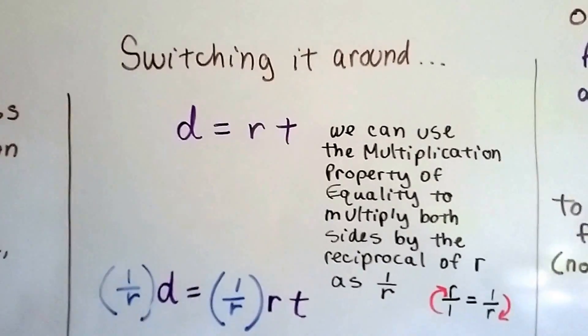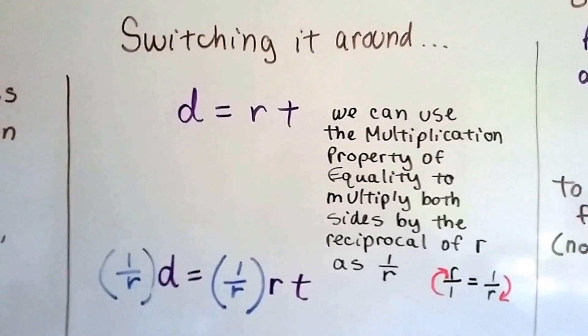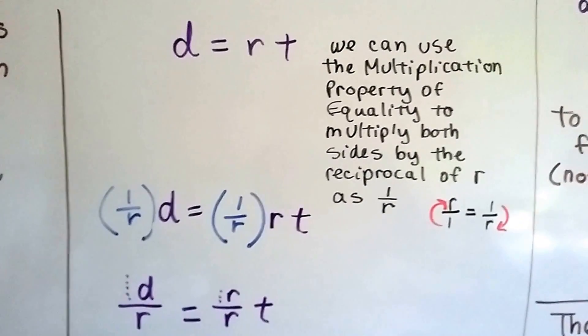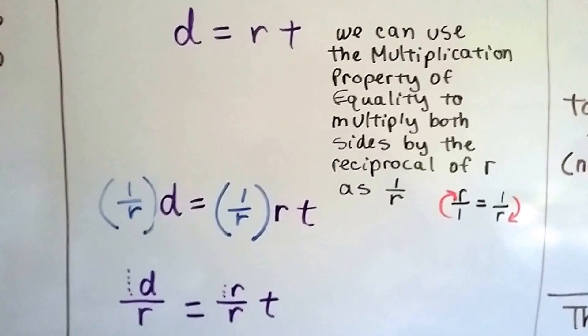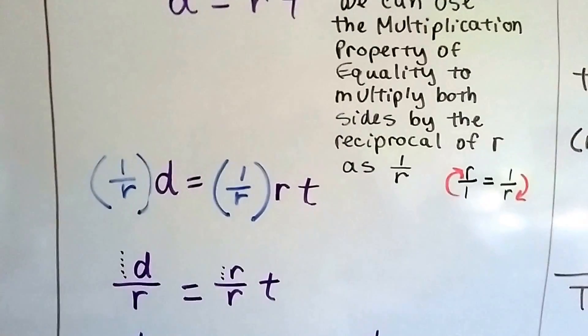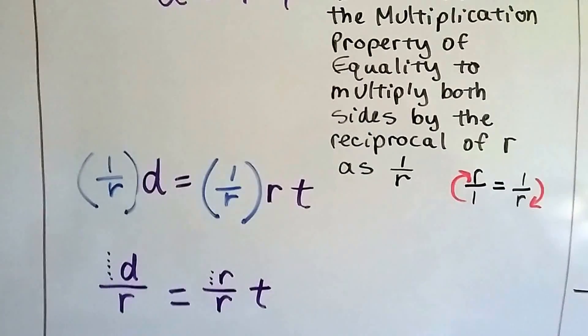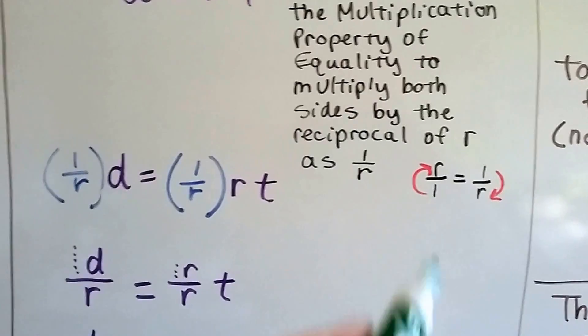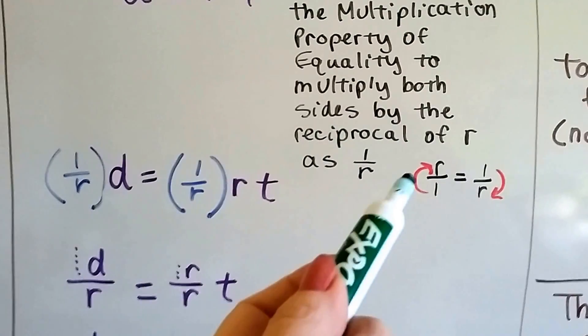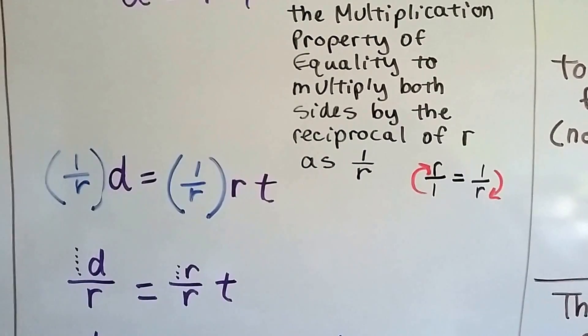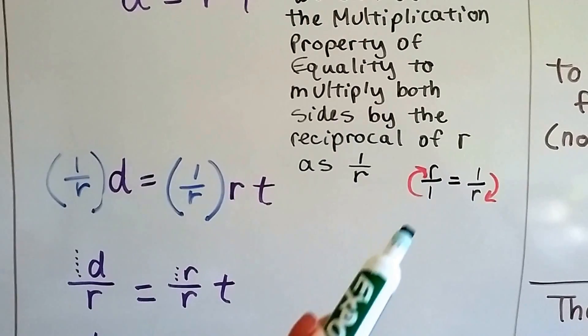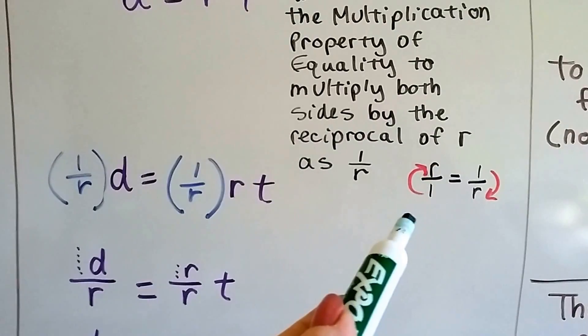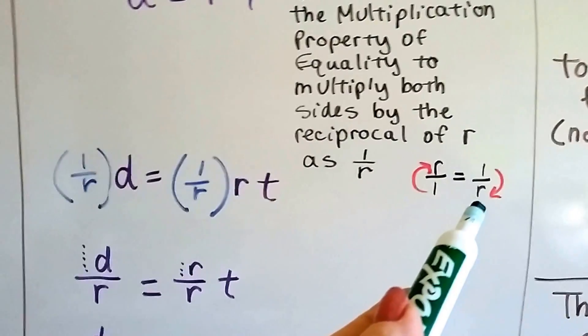So, switching it around, d equals rt, we can use the multiplication property of equality to multiply both sides by the reciprocal of r as 1 over r. Now, how can we get a reciprocal of r? r isn't even a number. Well, anything over 1 is that thing. It doesn't matter what number the r represents, an 8, a 10, a 99. If we put it over a 1, it's going to equal that number. So all we have to do is flip it around to get its reciprocal as 1 over r.